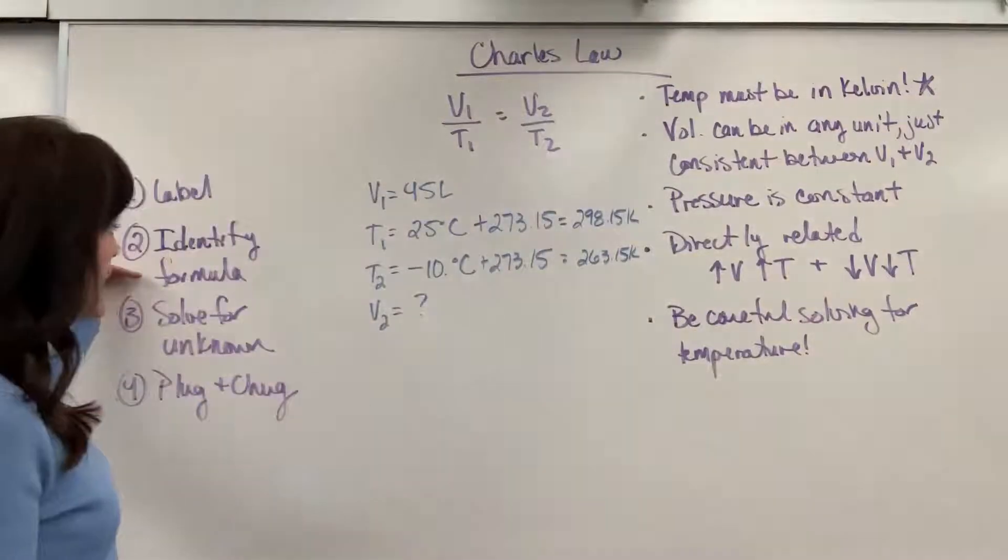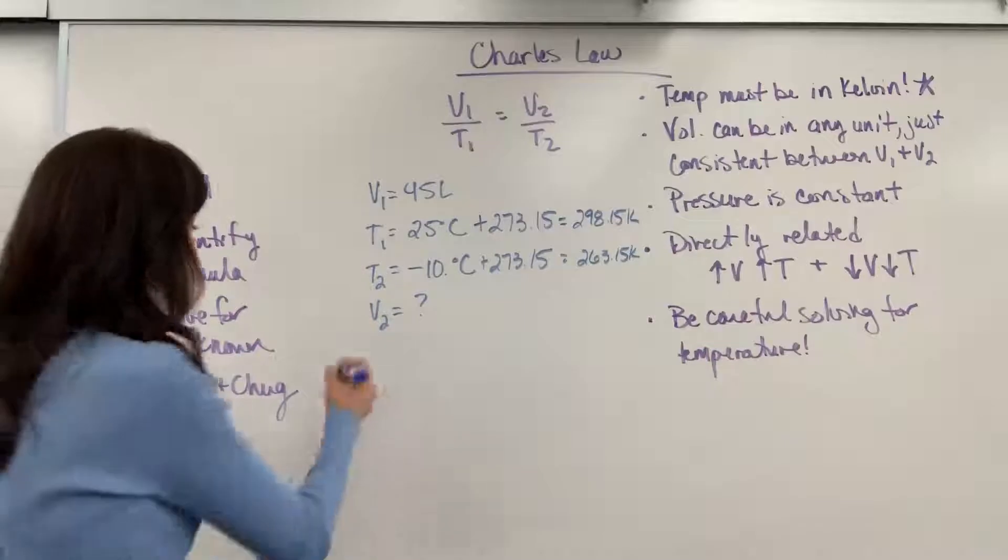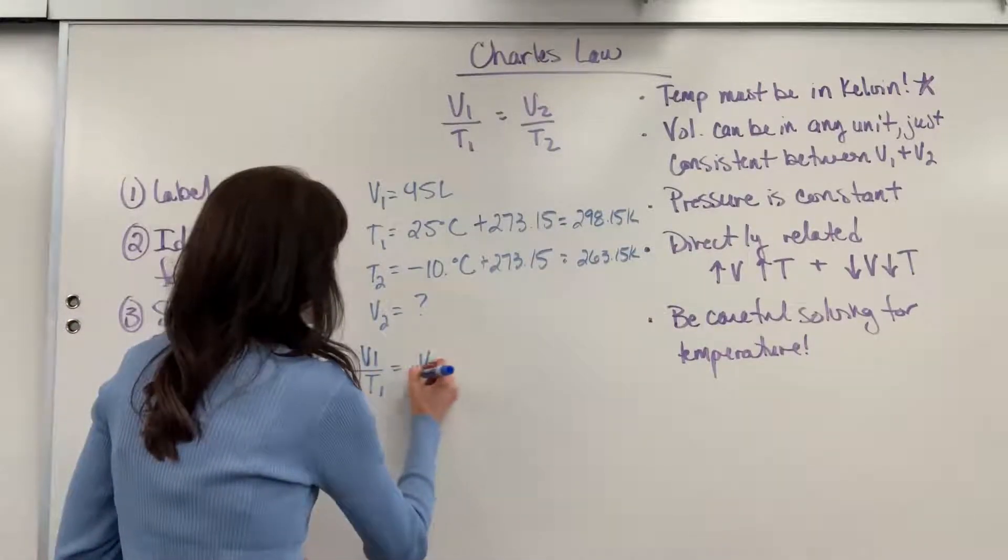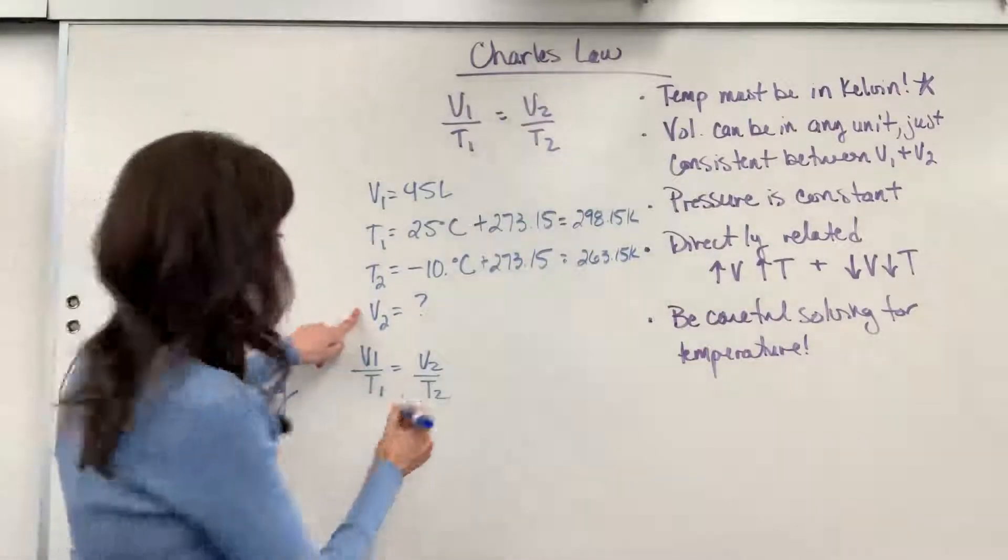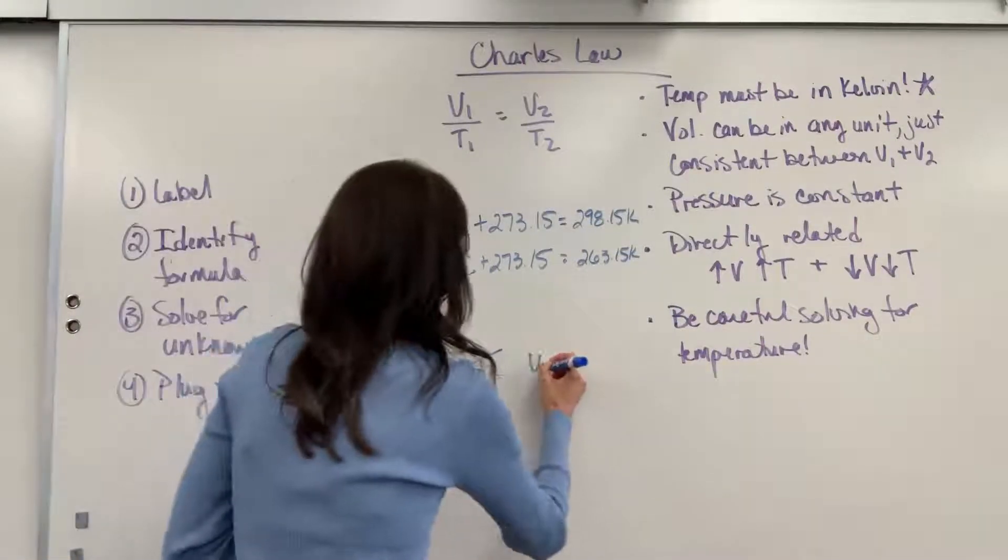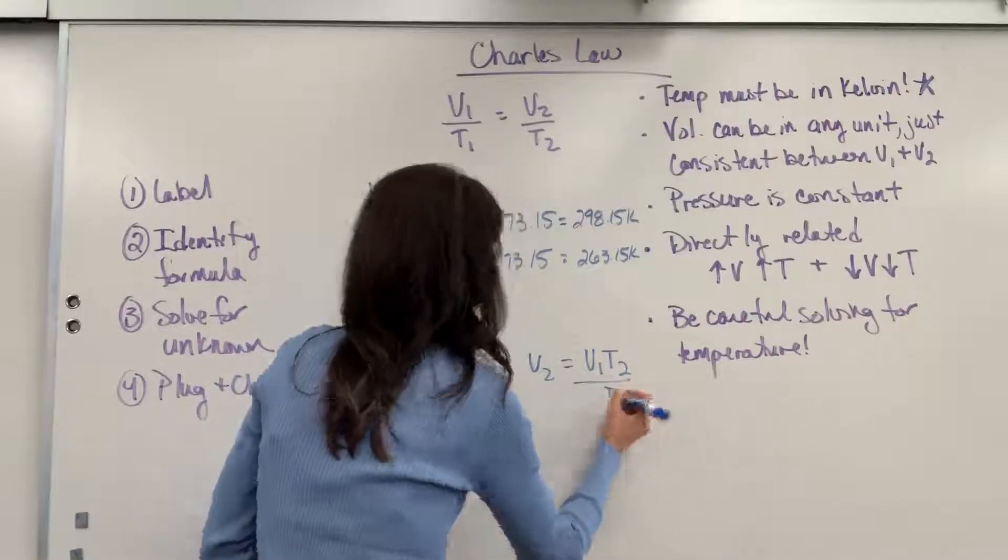I've labeled so I can tell I've got to use Charles Law because we have initial final conditions for volume and temperature. Let's go ahead and write this out. V1 over T1 equals V2 over T2. And I want to solve for V2. So let's multiply both sides by T2. And we will get V2 equals V1 T2 over T1.